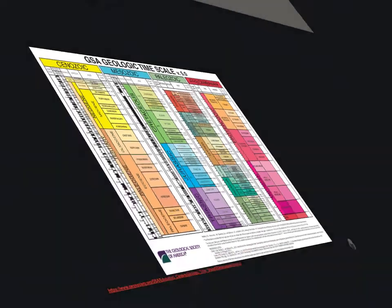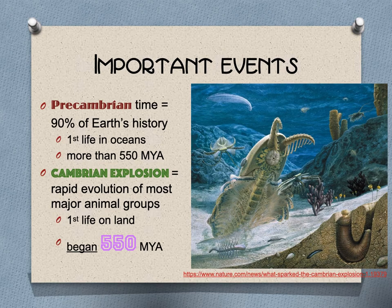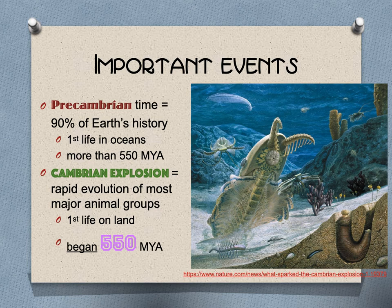There are a few important events in the history of Earth. One is a signature event called the Cambrian Explosion, which signifies the first life on land, heralded at 550 million years ago in the fossil record. Before that was the Pre-Cambrian time — that's 90% of Earth's history — and the first life was in the oceans. Then all of a sudden there is a multitude of fossils and you get your first land animals: that's the Cambrian Explosion, 550 million years ago.